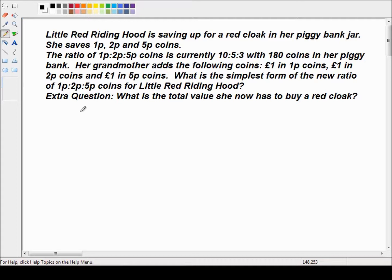Her grandmother adds the following coins: one pound in 1p coins, one pound in 2p coins and one pound in 5p coins. What is the simplest form of the new ratio of 1p to 2p to 5p coins for Little Red Riding Hood? And as a bonus question we've got, what is the total value she now has to buy a red cloak?